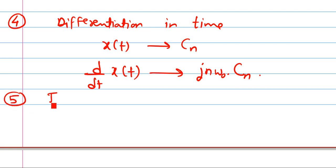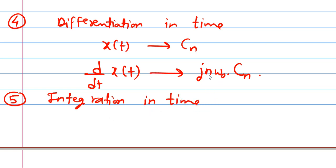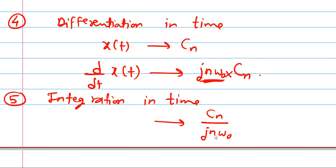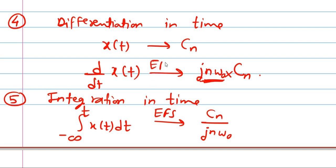Property number 5 is integration in time. Integration and differentiation are opposites. With differentiation, j-n-omega-0 is multiplied to Cn. With integration, Cn is divided by j-n-omega-0. So the integral from minus infinity to t of X of t dt has exponential Fourier series coefficient Cn divided by j-n-omega-0.